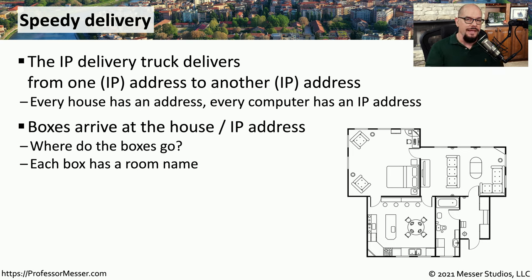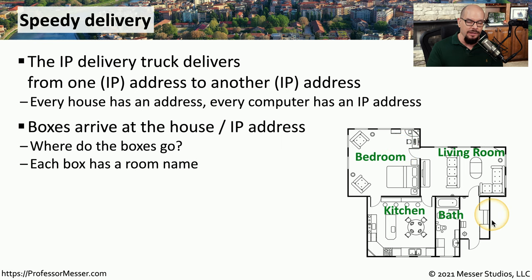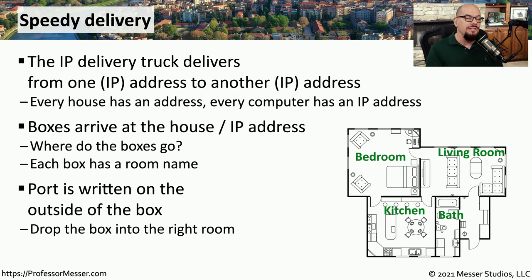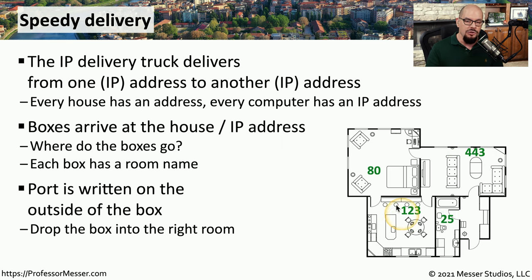Once the truck arrives at that IP address, it has to determine where this box is going. In the case of a delivery truck, each box has a particular room name written on it — one box may go to the kitchen, another to the living room. In the case of TCP or UDP, we use port numbers to designate where these boxes will be delivered. The port number refers to a location of a service on that device, such as port 443 or port 25.